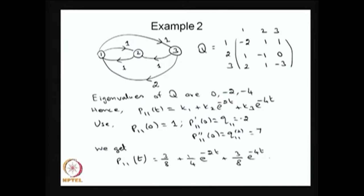Here I am using the initial condition as well as the Q matrix values: Q₁₁, meaning the element corresponding to position (1,1), is nothing but P'₁₁(0). Similarly, if I go for Q², the element Q²₁₁ at position (1,1) in the Q-squared matrix is nothing but P''₁₁(0). Now I can use these three initial conditions to get the unknown values k1, k2, and k3. Once I know k1, k2, k3, I can substitute to get P₁₁(t).